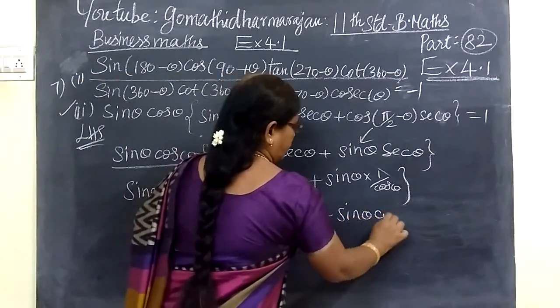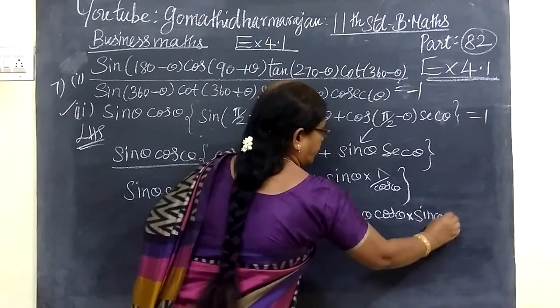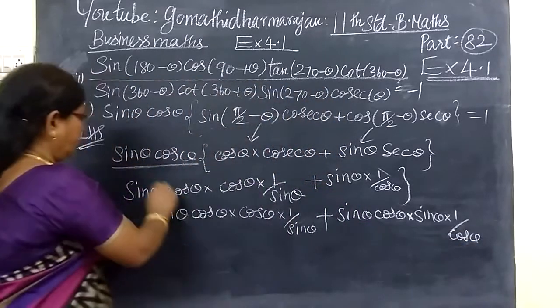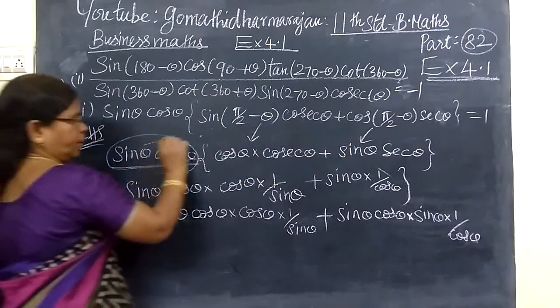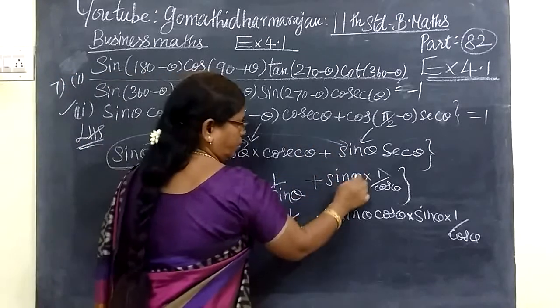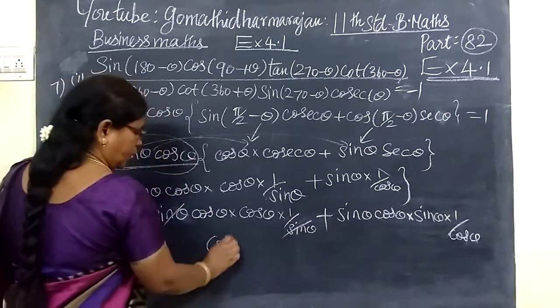This term equals sin θ into sin θ times 1 over cos θ. The entire term simplifies to sin θ squared.